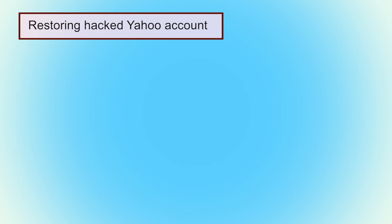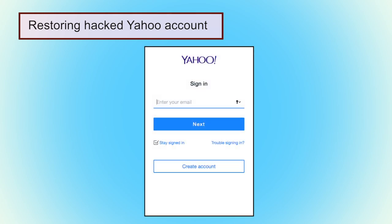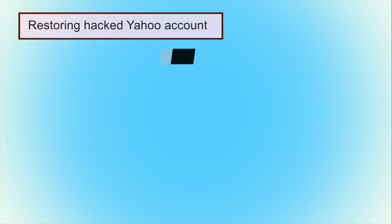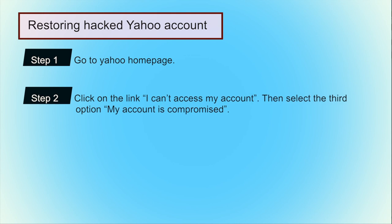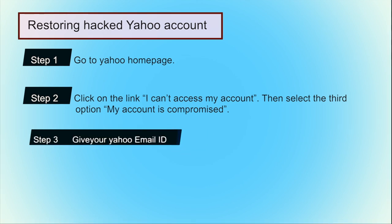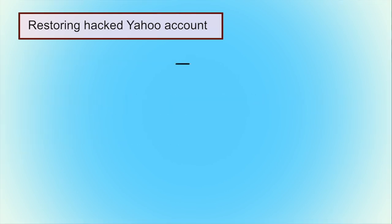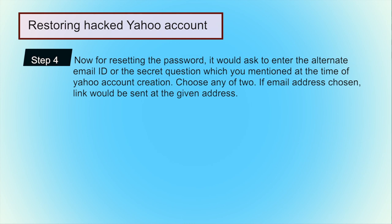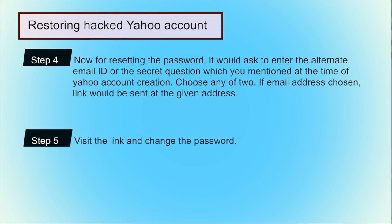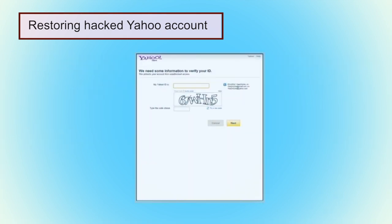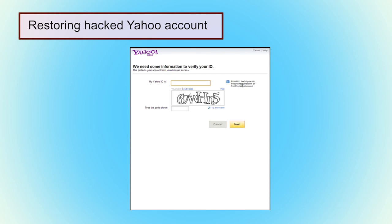For restoring a hacked Yahoo email account, visit the Yahoo homepage and click on 'I can't access my account.' Select the option where 'My account is compromised' is displayed and provide your Yahoo email ID. For resetting the password, it will ask for your alternate email ID or the secret question you mentioned at the time of Yahoo account creation. If you choose the email address option, a link will be sent to that address — visit the link and change the password. The process also includes authentication with a CAPTCHA.